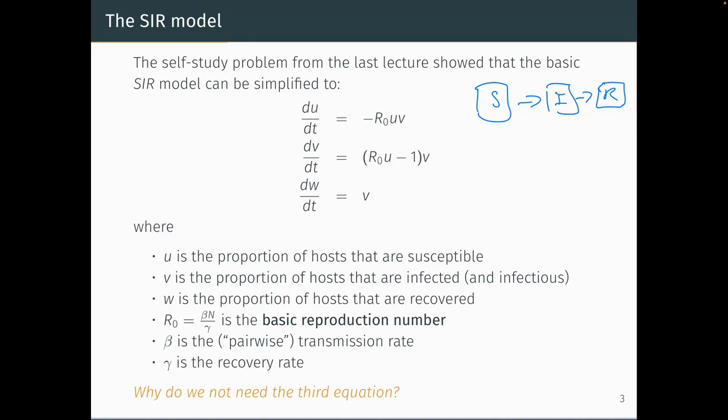We've switched to these rescaled equations, using the fact that population size N was constant — so we could divide by N — and this gave us equations now with essentially just one parameter: R₀, the basic reproduction number. That equals β times N divided by γ, where β is the transmission rate and γ is the recovery rate. All that really matters is what those three parameters give you combined.